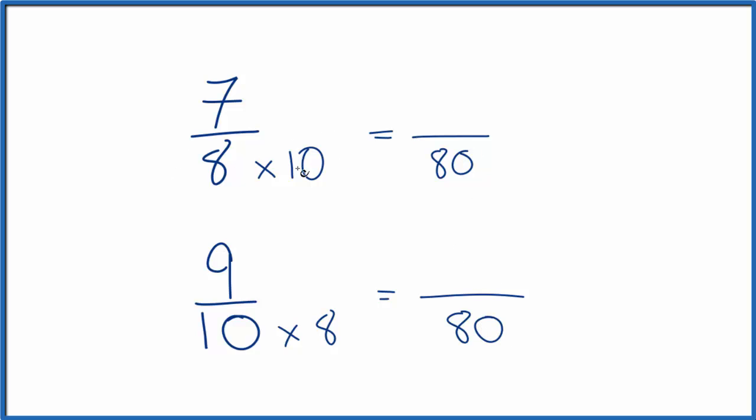But I can't just multiply by 10. I have to multiply the top and the bottom by 10. That's because 10 over 10, that's equal to 1. So I'm just multiplying 7/8 by 1. I get 7 times 10 is 70, 8 times 10 is 80. But 7 over 8 and 70 over 80, they're the same actual number. So that's good.